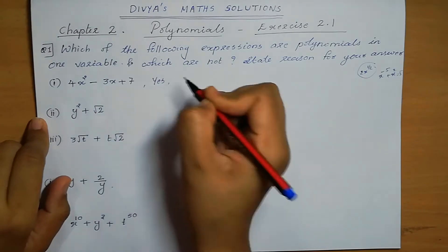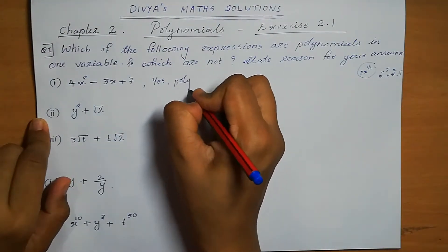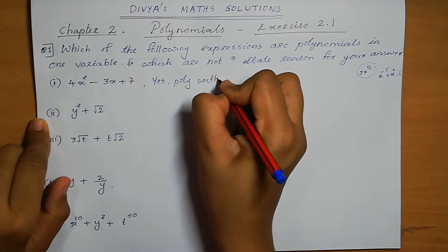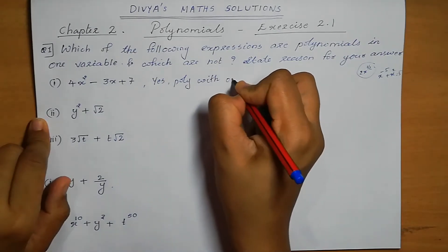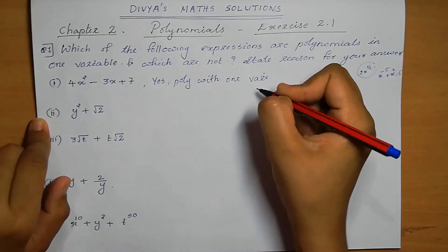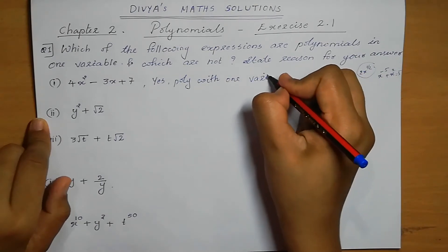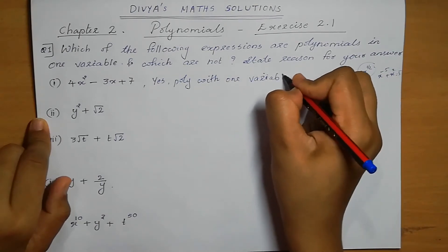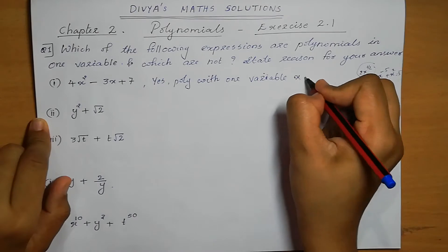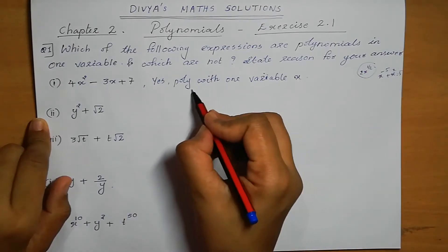Therefore, 4x squared minus 3x plus 7 is a polynomial with one variable, x.